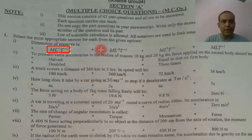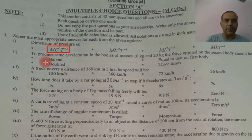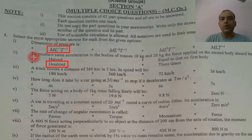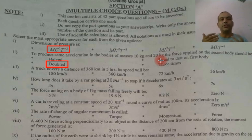We have the next option: to produce the same acceleration in a body of mass. When you double the mass, you have to double the force to produce the same acceleration. To produce the same acceleration in bodies of mass 10 kg and 20 kg — the same acceleration is produced — I need to double the force. When you double the mass, you have to double the force.